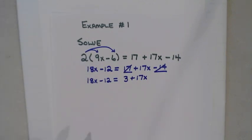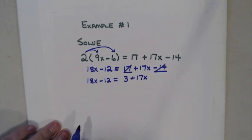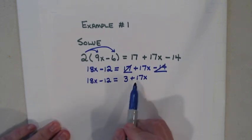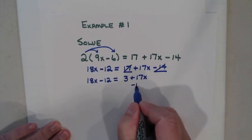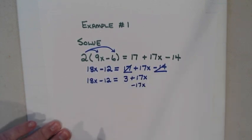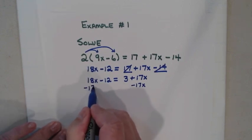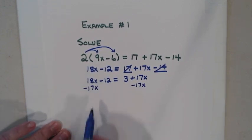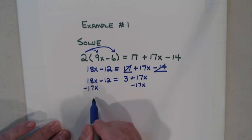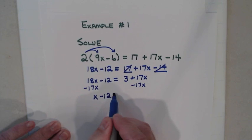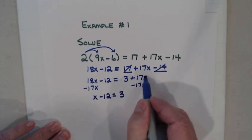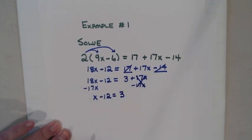Next I check if there's a variable on the right side — and there is: 17x. I need to eliminate that by subtracting 17x, and whatever I do to one side I have to do to the other. 18x minus 17x is x. Bring down negative 12 equals 3. The 17x on the right side is eliminated.